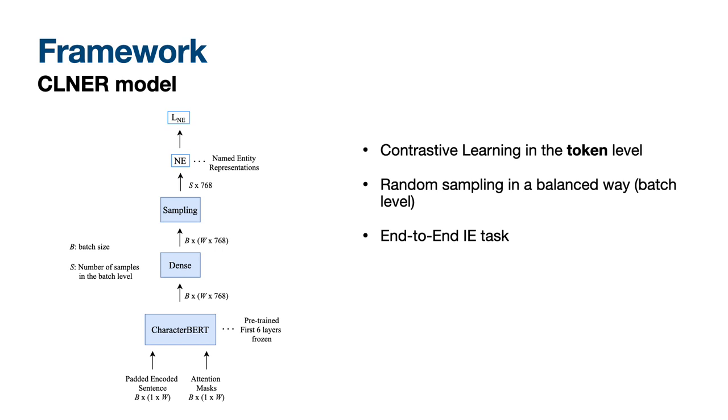In order to solve end-to-end information extraction, we need to create a different latent space for the named entities. So, we propose a CLDR+ model, and apply contrastive learning in the token level after sampling entities in a balanced way.